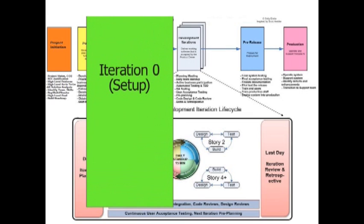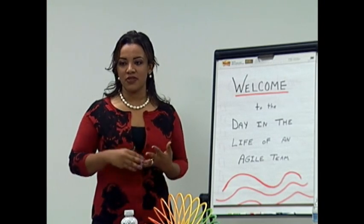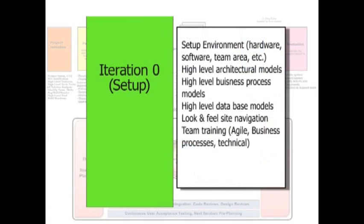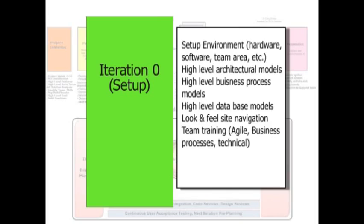Next you go into iteration zero, which is basically the foundation setup. Set up the tools, configure everything, get the servers going, come up with high-level architecture designs and high-level business process, set up the team room and team environment, install software, and figure out the build process — anything that's absolutely must-have for iteration one to succeed. You don't want to make the mistake of spending two, three, four months in iteration zero; that's why we time-box it to an iteration. It is just enough to make iteration one successful. A very important part of iteration zero is that you pre-plan for the next iterations, because if you don't, you'll begin to fall behind. You need to start getting ready for the stories coming up in the following iterations.